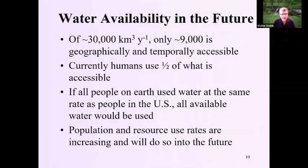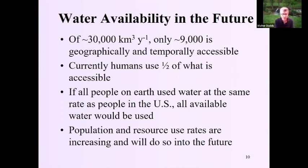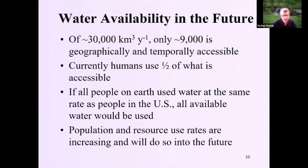Here are the numbers: we use about half of what's available of the 30,000 cubic kilometers per year. In total, only 9,000 cubic kilometers is geographically and temporally accessible. If all people on earth used water at the same rate as people in the United States, all available water would be used up — for two reasons: one, we have a higher standard of living requiring more water for food, industrial products, and eating higher on the food chain; and two, we're just not as efficient as some other places. Israel, for example, has been extremely limited on water and is probably five times more efficient with their water than we are. The per capita use and population are both going up globally, so it's not just a local problem but also a global one.